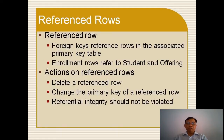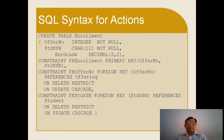Now I go to reference rows. A reference row means the foreign key references a row in the associated primary key table. Enrollment rows refer to Student and Offering. Actions on reference rows: you can delete a reference row or change the primary key of a reference row, but referential integrity must not be violated. In the CREATE TABLE Enrollment syntax, you have the fields: offer number, student social serial number, enroll grade, with data types integer for offer number, character for student social serial number, and decimal for grade.